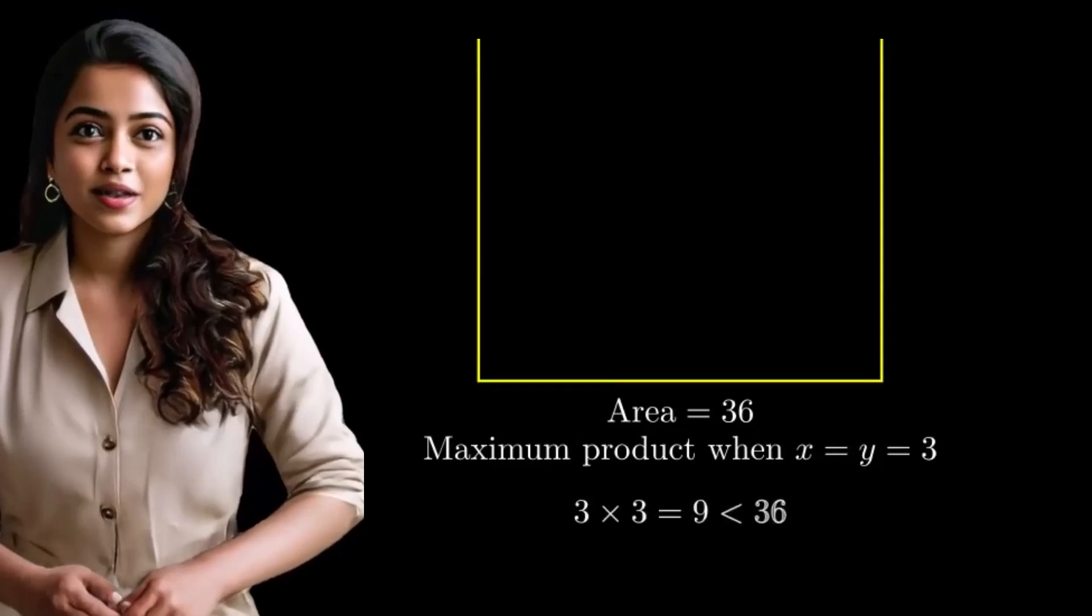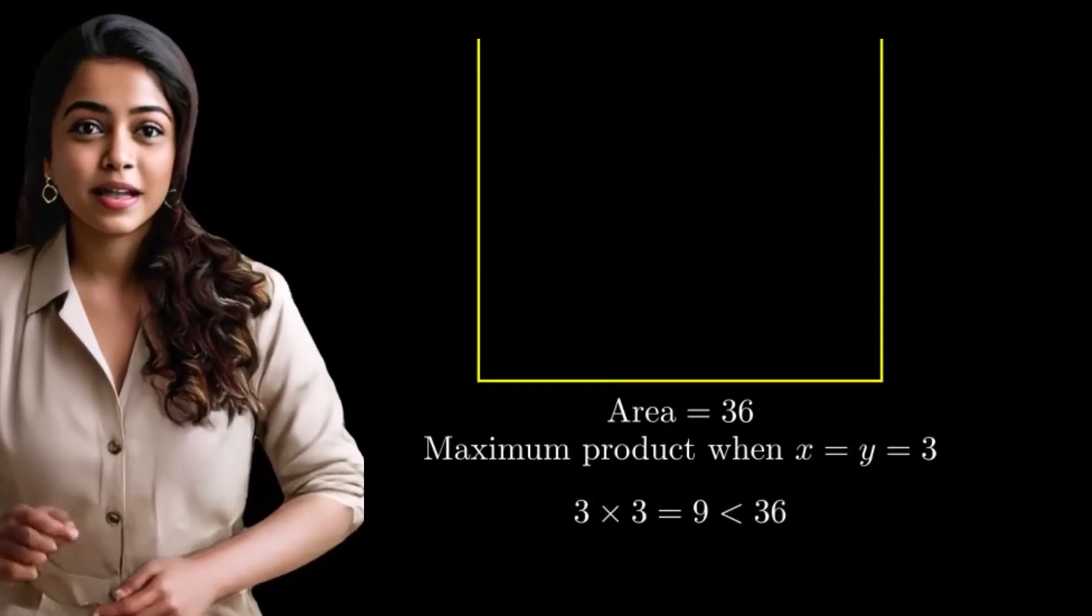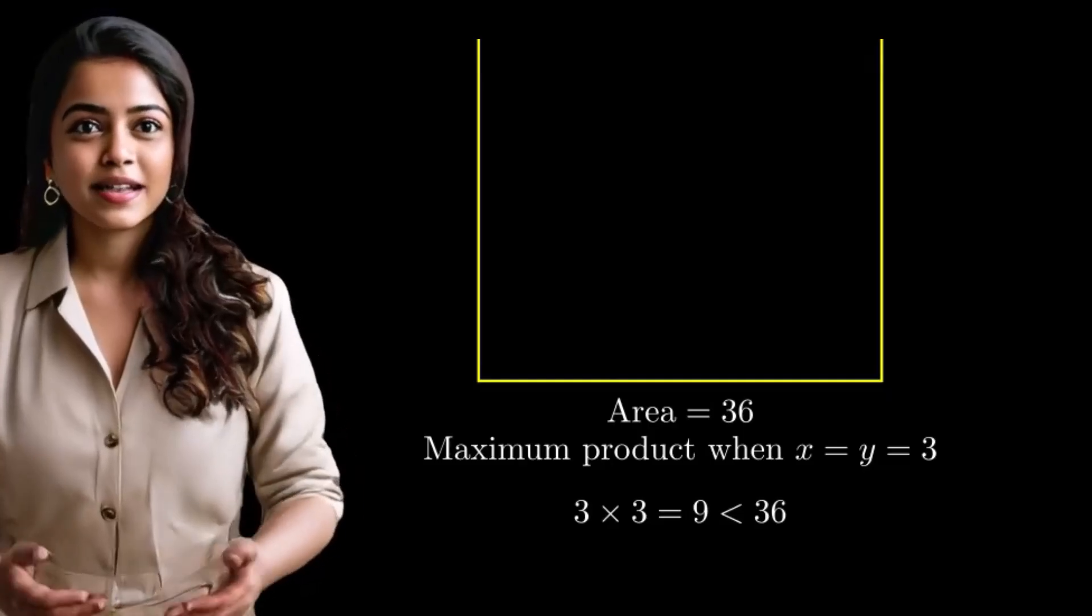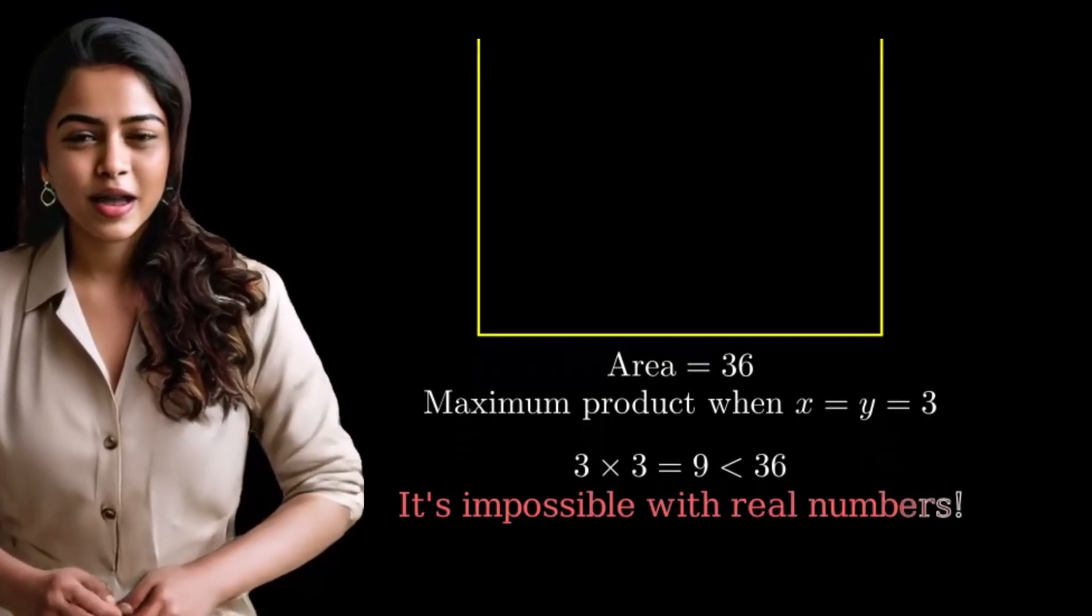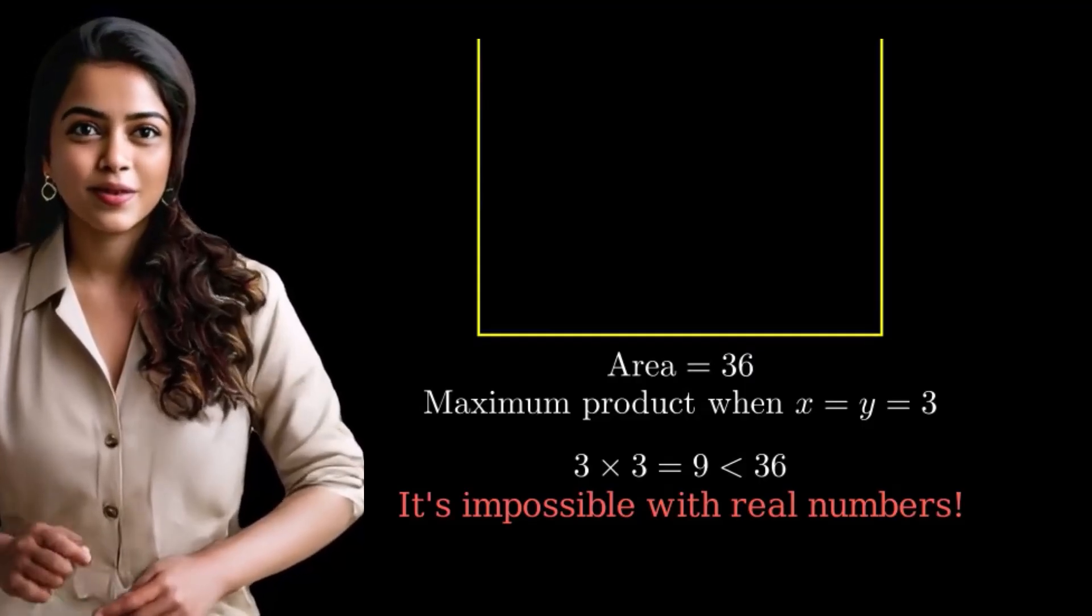When two numbers add up to 6, their biggest possible product is when they're equal, both 3. But 3 times 3 is only 9. We need 36, which is way bigger than 9. It's impossible to find two real numbers that work.